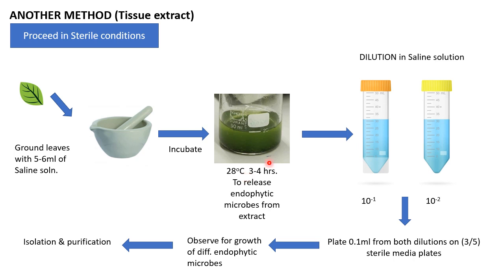After incubation, perform serial dilutions of the concentrated extract in saline solution. Prepare suspensions such as 10⁻¹, 10⁻², or 10⁻³ dilutions, depending on how concentrated your extract is. Then plate 0.1 ml from each saline suspension onto at least three sterile media plates per dilution, following triplicate practice, to avoid missing any particular endophyte that may be present in your sample.